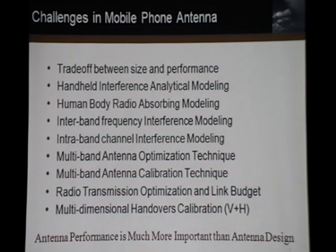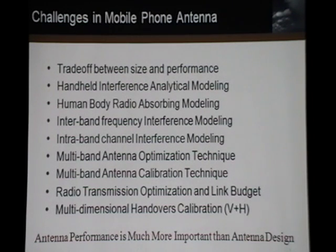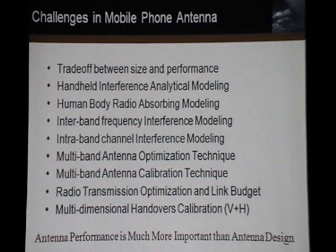There is also inter-channel interference modeling — if you're using the same wireless standard but different channels, there are multiple channel interferences. We also have multi-band antenna optimization technology, because if you're using multi-band antennas in one device, optimization is very important. It's not just about how you design the antenna; optimizing the performance is critical. We also need multi-band antenna calibration technologies to compensate and reduce interference and other issues.